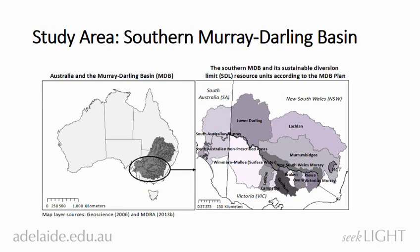This map quickly shows our study area. We are studying water trading behavior in the southern part of the Murray-Darling Basin, which is hydrologically linked. The model used in this study is based on the river valleys in the southern part of the Murray-Darling Basin, which you can see here on the map. So it's a regional analysis.